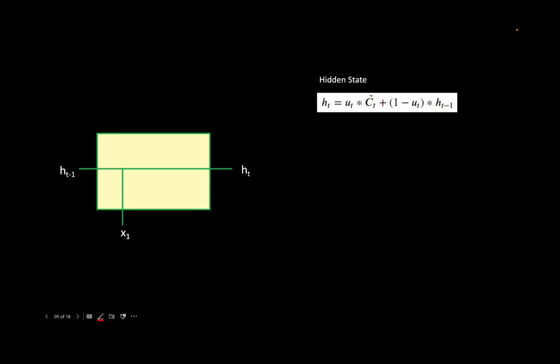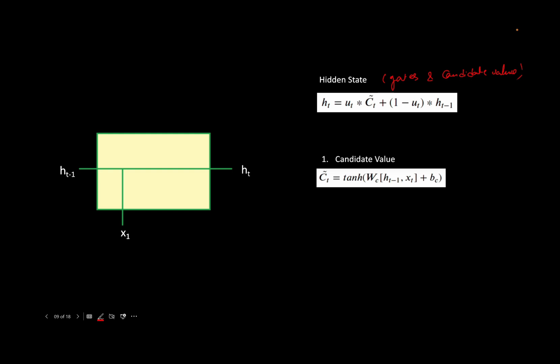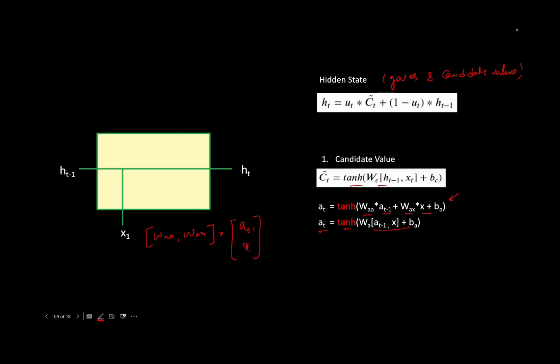The equation of the hidden state is a combination of gates and something called the candidate value. The equation of the candidate value is very similar to the equation of the activation in simple RNN. What's done is that the W matrices W_AA and W_AX are concatenated into one matrix, and A_{t-1} and X are also concatenated into one matrix. This candidate value acts similarly to the hidden state in simple RNN, and is updated with every new word, adding new context to memory. That's why it's called the candidate value — it provides new candidate information to the hidden state.